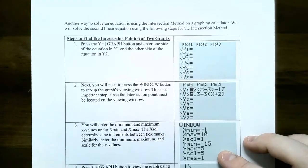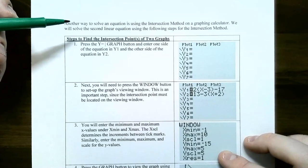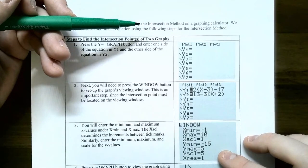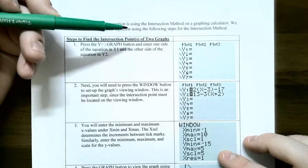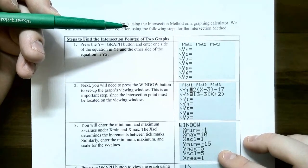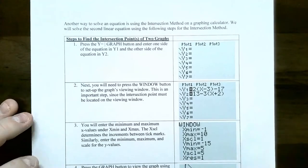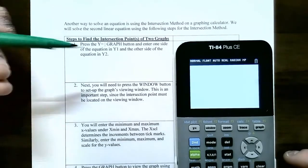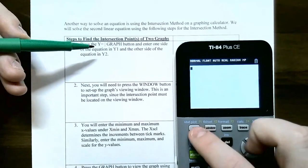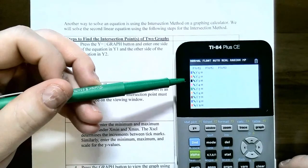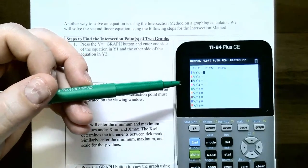The second method for solving a linear equation on a graphing calculator is called the intersection method. This is more convenient when the answer is a fraction, like 18 over 7. We'll solve a different equation: 2 times the quantity x minus 3, subtract 17, equals 13 minus 3 times the quantity x plus 2. Enter the left side as y1 and right side as y2.